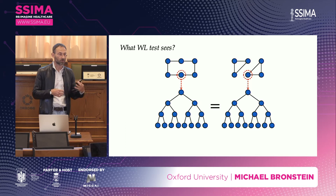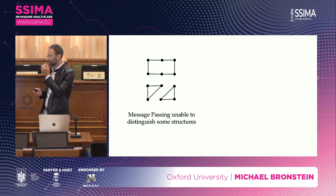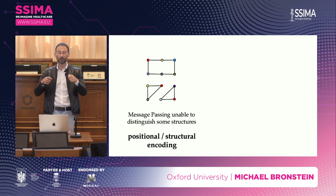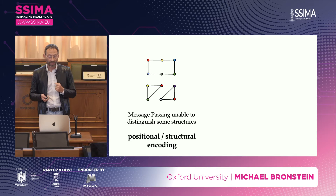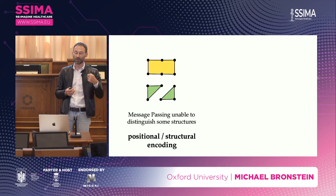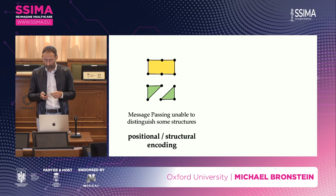There is an entire hierarchy of Weisfeiler-Lehmann algorithms — you can go to higher-order methods at the expense of computational complexity. A simpler trick used in the literature is positional encoding: if you can pre-label the nodes of the graph in some way — even assigning random labels — you can break the regularities that confuse the WL algorithm. Another possibility is to detect structures it cannot detect, such as triangles and rectangles, and provide them as features attached to the nodes. This is called structural encoding.